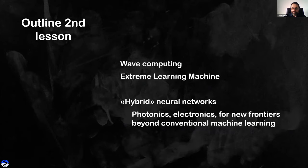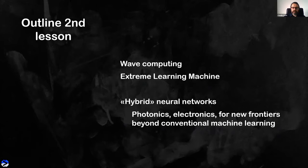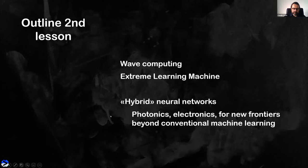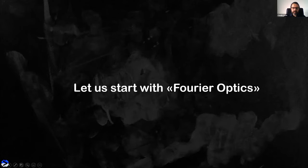Finally, I will mention two new directions emerging from the marriage between photonics and electronics — new devices that go beyond conventional machine learning. When we use photonics, we can not only speed up or replicate typical machine learning computations but do something more with light compared to electronics. Let us start with Fourier optics.